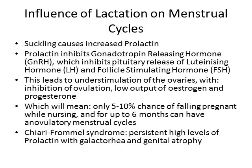However, some women can develop Chiari-Frommel syndrome, where the brain constantly makes more and more prolactin even when breastfeeding is stopped. This can cause galactorrhea — massive amounts of breast milk. And because of that inhibition on gonadotropin-releasing hormone, which ultimately leads to a drop in estrogen and progesterone, a woman can even have genital atrophy.